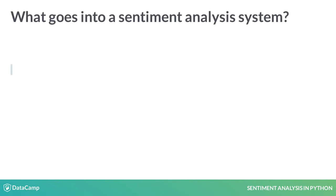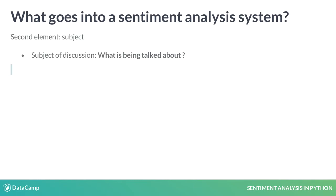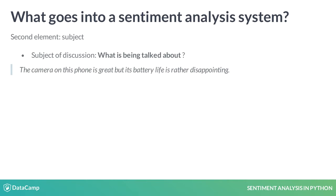The second element in a sentiment analysis system is the subject that is being talked about, such as a book, a movie or a product. Sometimes one opinion could discuss multiple aspects of the same subject. For example, the camera on this phone is great, but its battery life is rather disappointing.